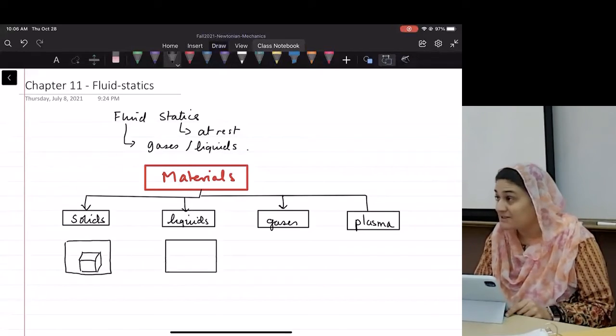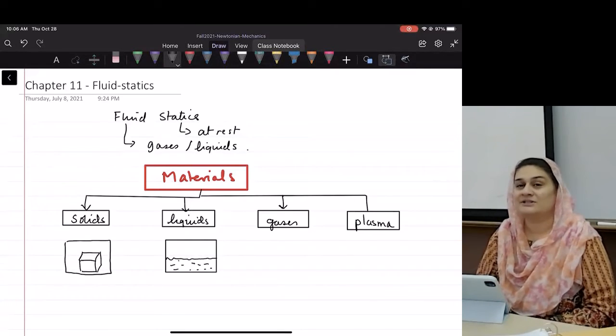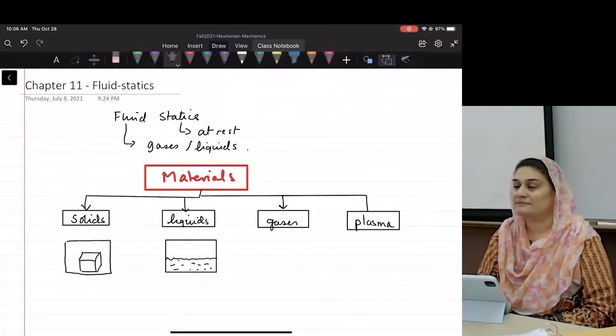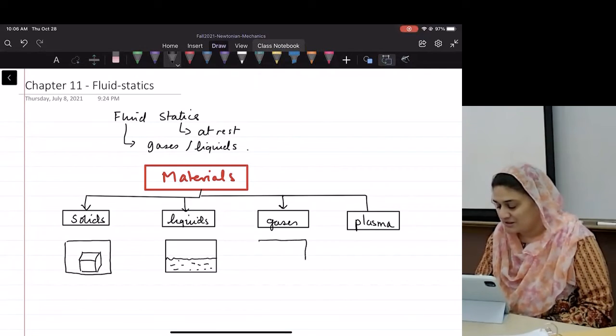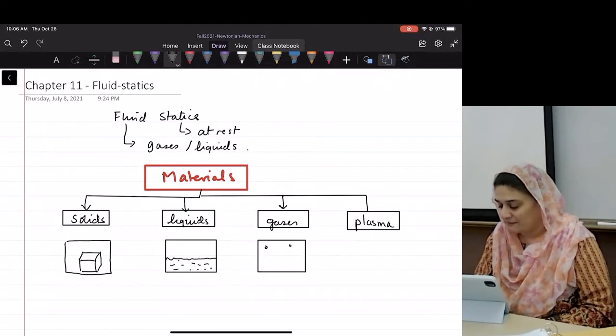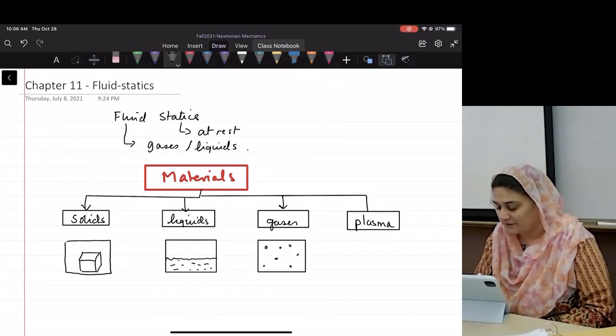Liquid is something that, when I pour into a container, takes the shape of the container. Gases do the same thing, except they will go everywhere in the container.